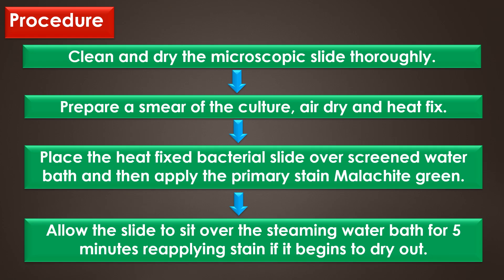Procedure: clean and dry the microscopic slide thoroughly. Prepare a smear of culture, air dry and heat fix. Place the heat-fixed bacterial slide over the steaming water bath and then apply the primary stain 0.5% malachite green. After that, allow the slide to sit over the steaming water bath for 5 minutes, reapplying the stain if it begins to dry out.